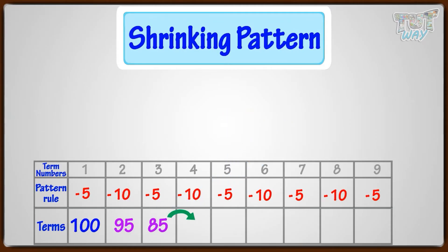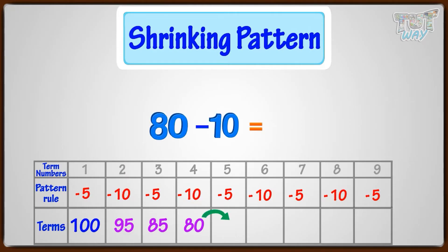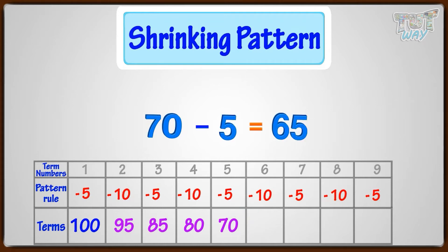For the next term, again we have to minus 5: 85 minus 5 equals 80. Now we will minus 10, so the next term is 80 minus 10 equals 70. Again, we will minus 5, so the next term is 70 minus 5 equals 65.